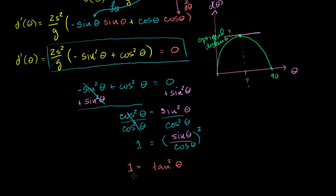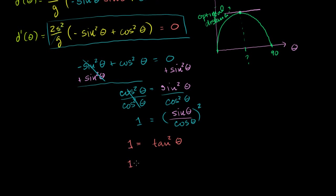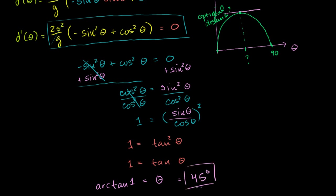We take the positive square root of both sides — tangent is positive over the interval from 0 to 90 degrees. So we get 1 equals tangent of theta. Then taking the inverse tangent, or arctan, of both sides: arctan(1) equals theta. This is just saying theta is the angle whose tangent equals 1. And the arc tangent of 1 is 45 degrees, or pi over 4 radians.